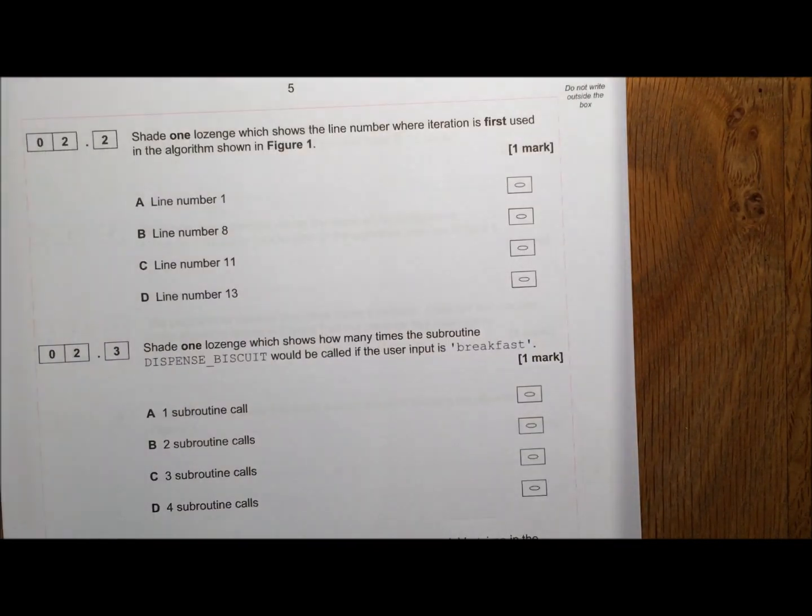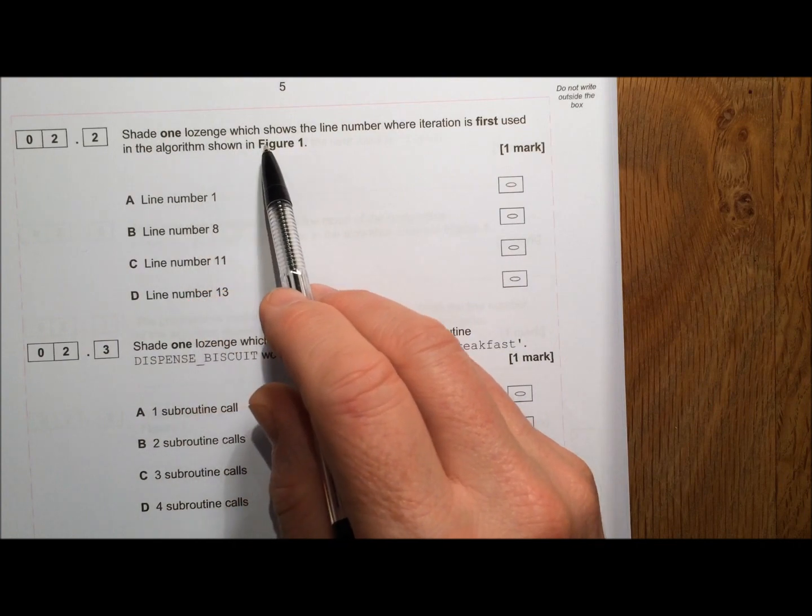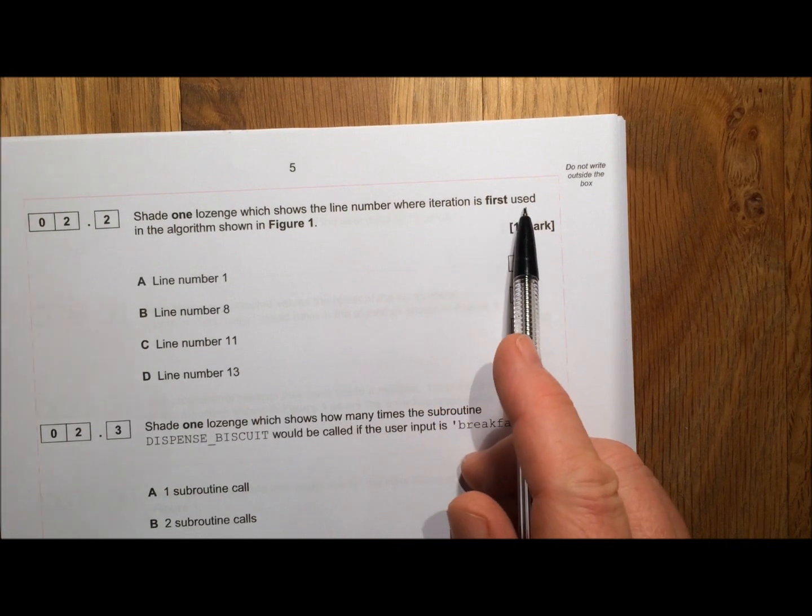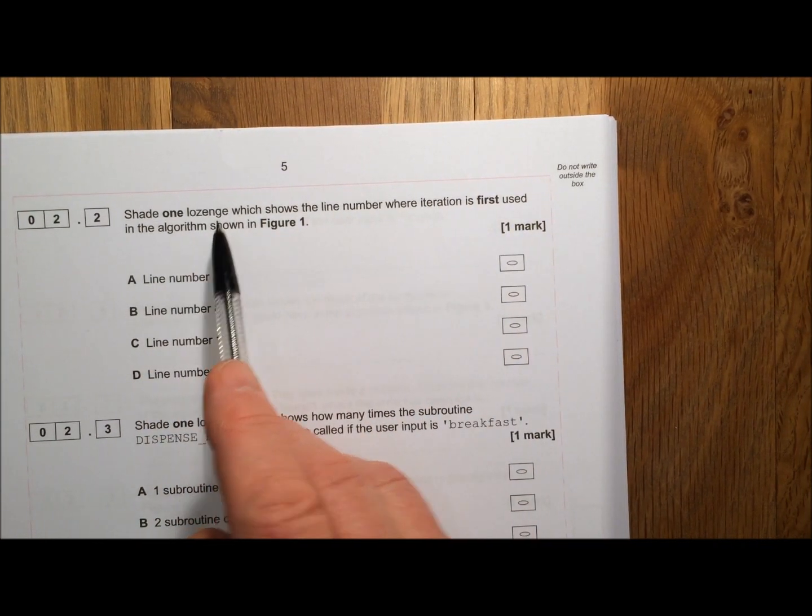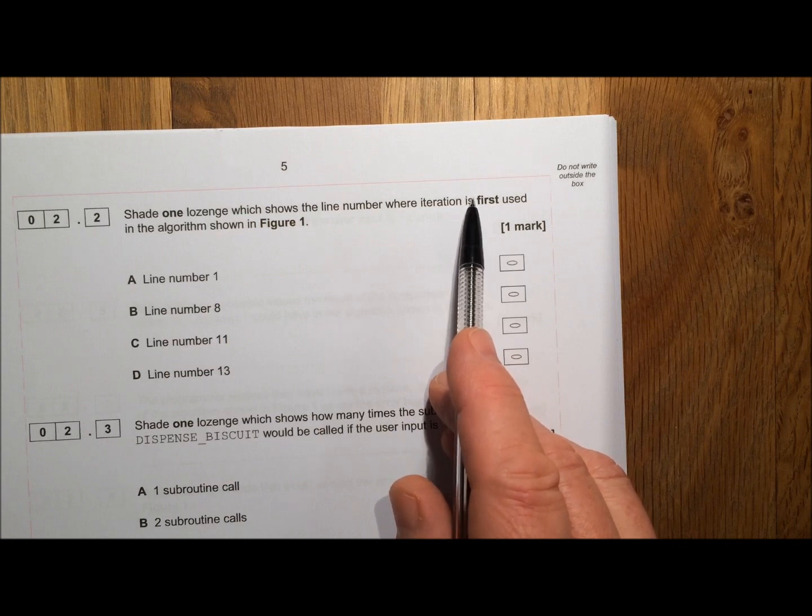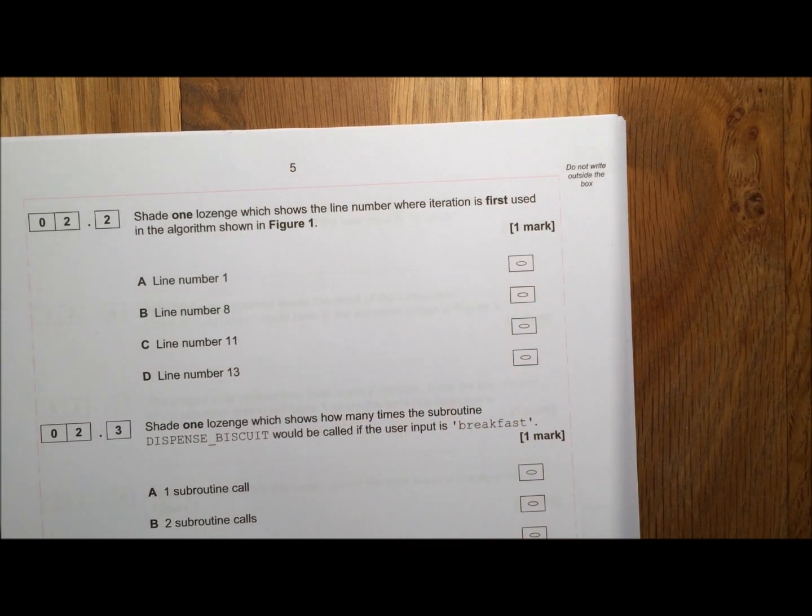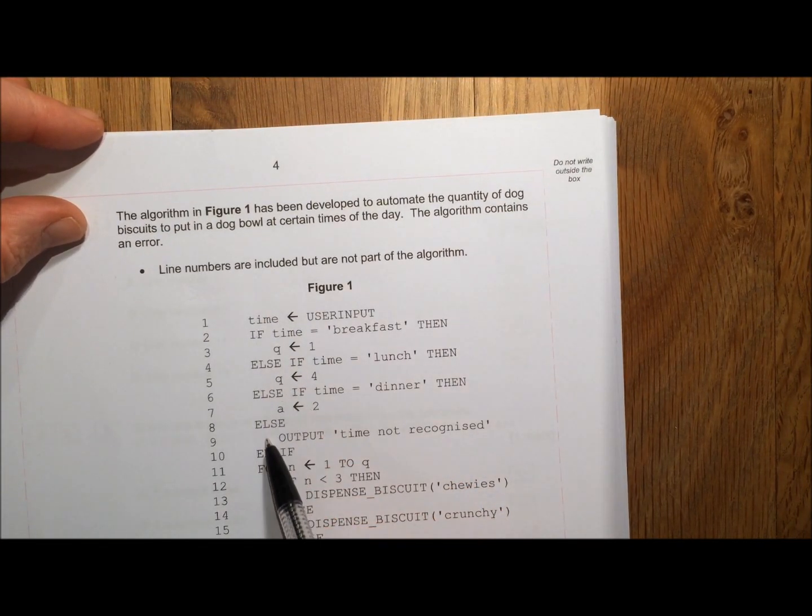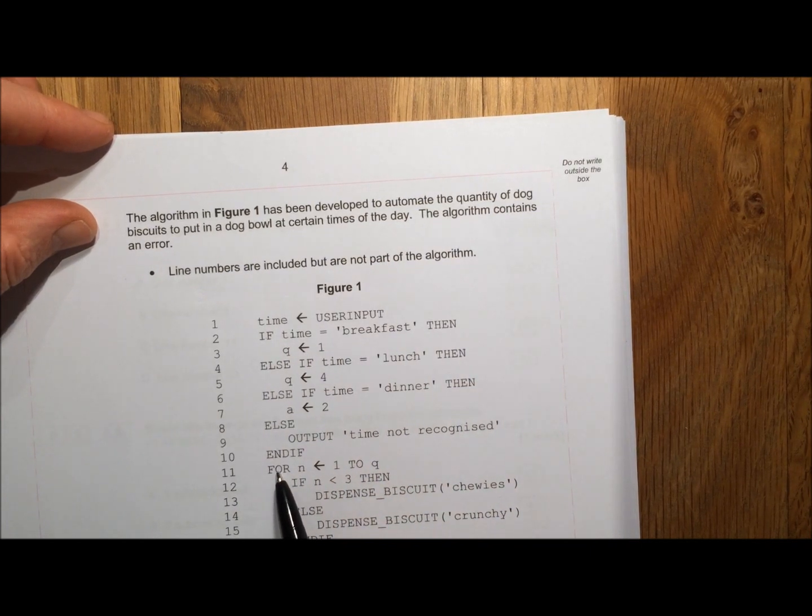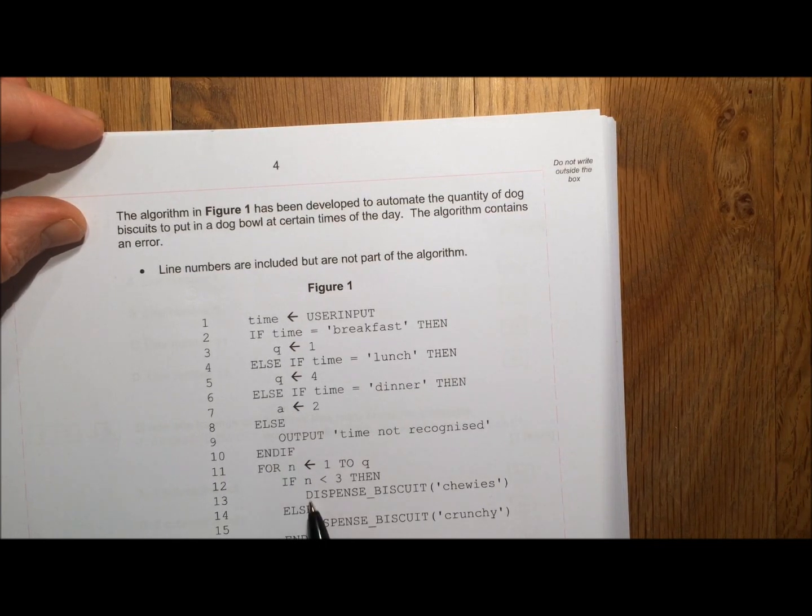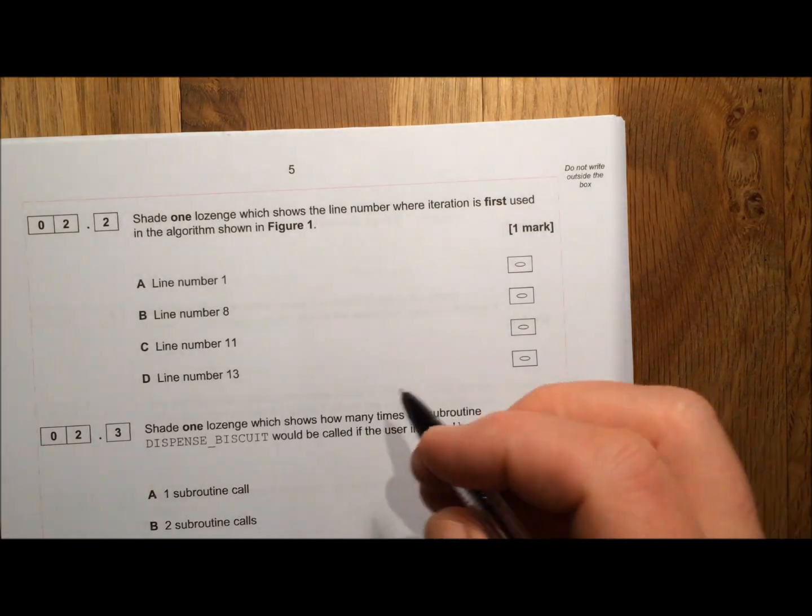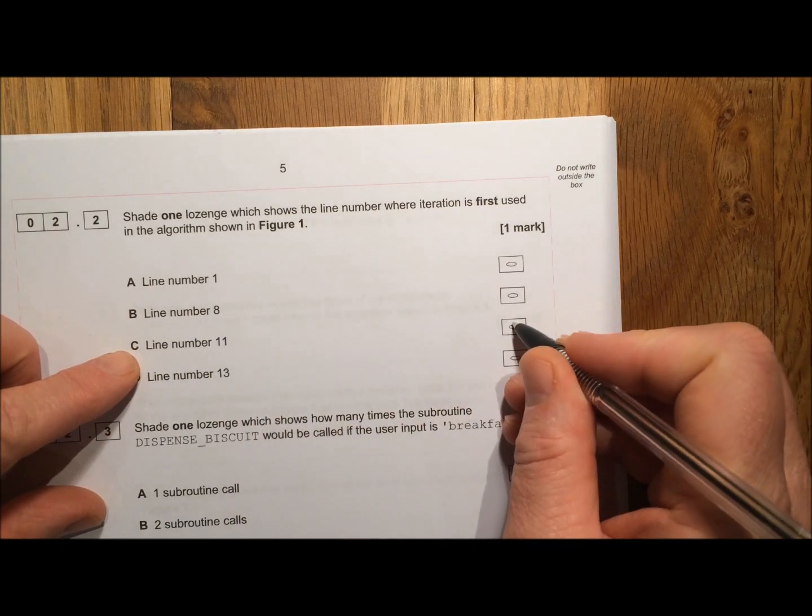Let's have a look at the next question. Shade one lozenge which shows the line number where iteration is first used in the algorithm. Iteration means looping, repeating. So where did we first come across looping or repeating? Well, it's not anywhere here. This is all straight through. When we get to here though, for is a kind of iteration, definite iteration which repeats. So the first place we find iteration is in line 11.